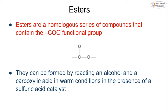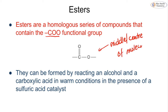Esters are another homologous series of compounds — this is the fifth homologous series we've met. We've looked at alkanes, alkenes, alcohols, carboxylic acids, and now esters. These are not hydrocarbons because they contain oxygen. They contain the COO functional group: a carbon double-bonded to an oxygen, which is then bonded to another oxygen. Extension bonds on both ends mean the ester group will always be towards the center of the molecule — never at the end of a carbon chain.